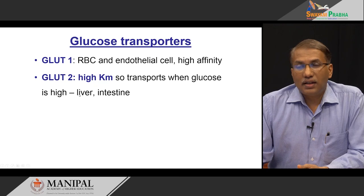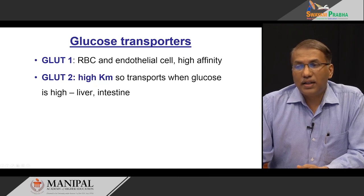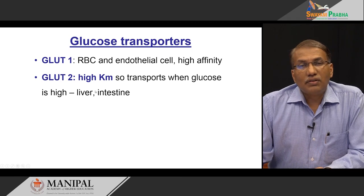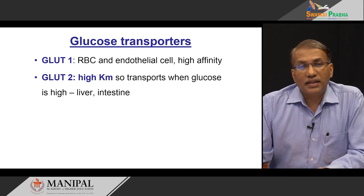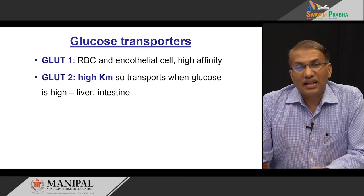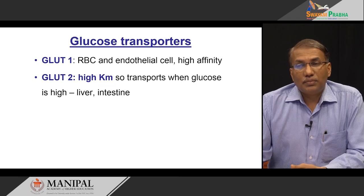GLUT2 is present specifically in the liver and intestine. I have already explained the importance of GLUT2 in the intestine, wherein unless glucose is too much it will not facilitate the entry of glucose from the intestinal cell into the blood system. That means it will further retard the rate of flow of blood sugar from the intestinal cell into the blood.